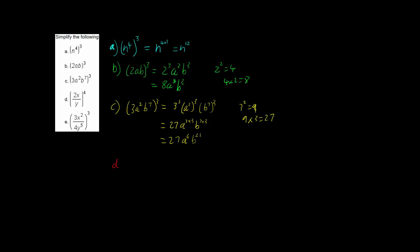Now looking at part d, we have 2x over y all raised to the power of 4. This is the sixth index law, which states that everything on the numerator gets raised to that power and everything on the denominator gets raised to that power. So we have 2 to the 4, x to the 4, divided by y to the 4. Since 2 cubed is 8, 2 to the 4 is 8 times 2 which is 16. So the answer is 16x to the 4 over y to the 4.